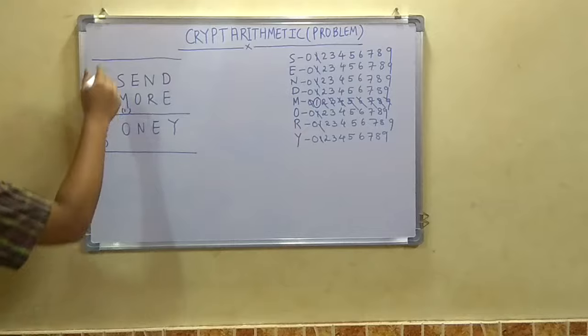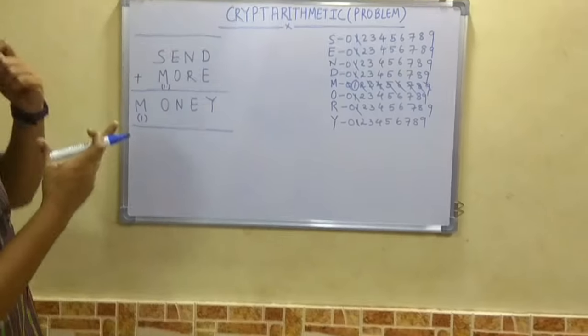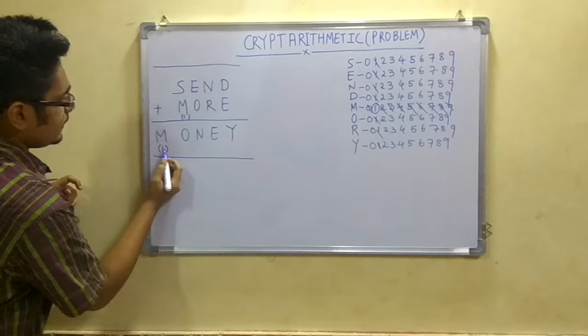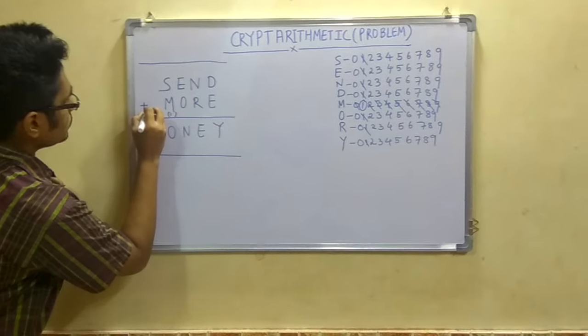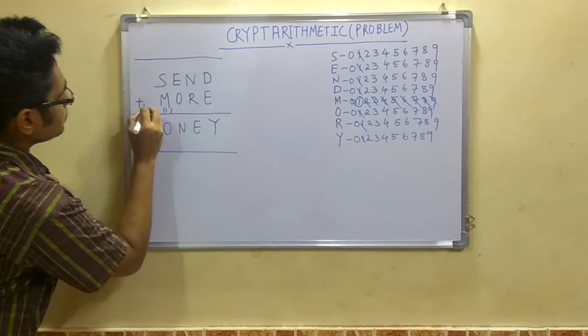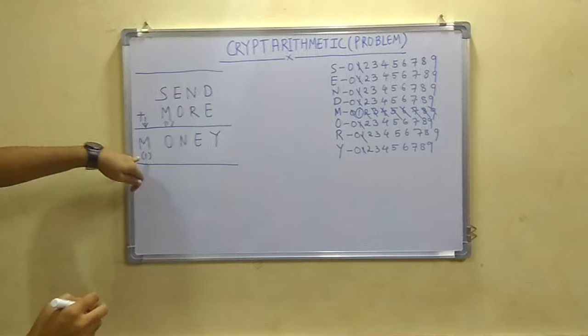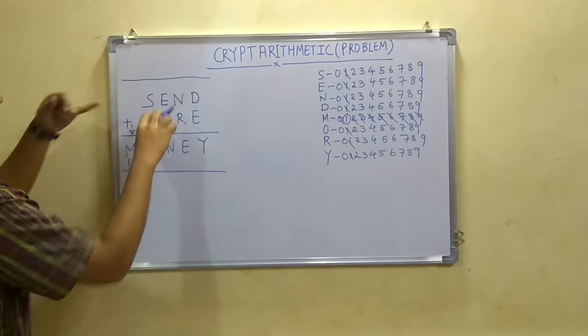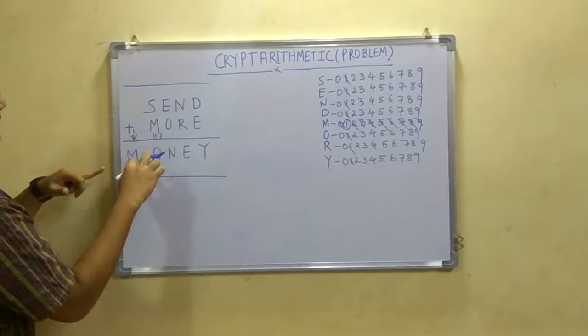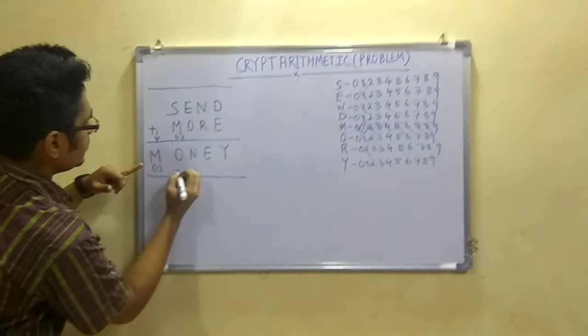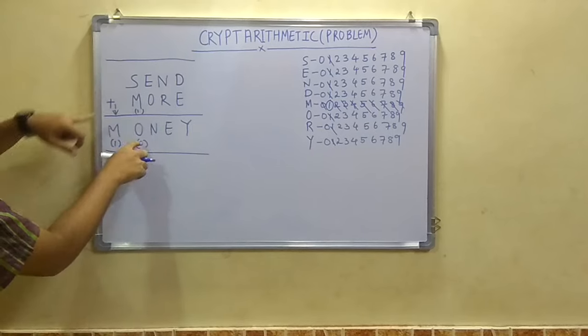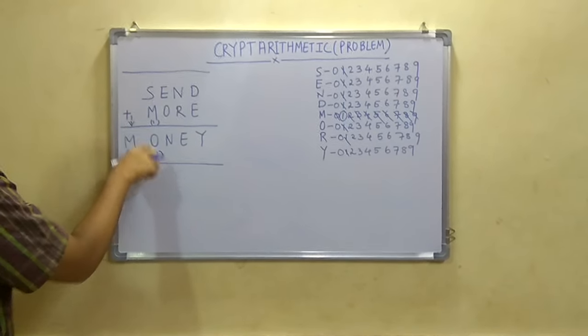Next is that we have to solve this equation. Now how will you solve this equation? Now obviously if here it is a 1, there should be a carry here. One should be carried down. Now what gives you some value as a carry here? Means obviously here it should be 10. Like O should be 0. Then only it would be 0,1. So 0 carry 1.